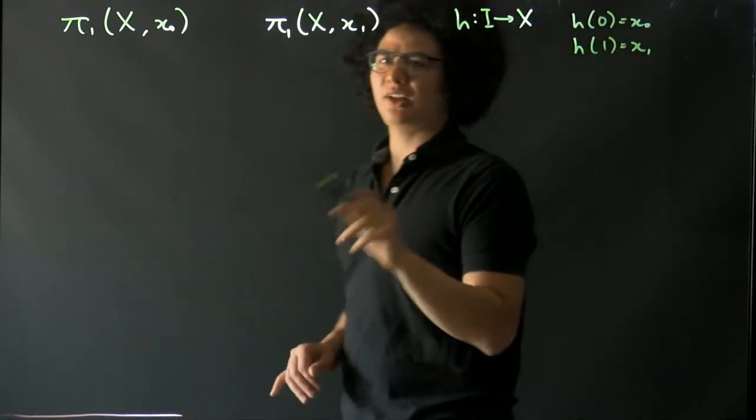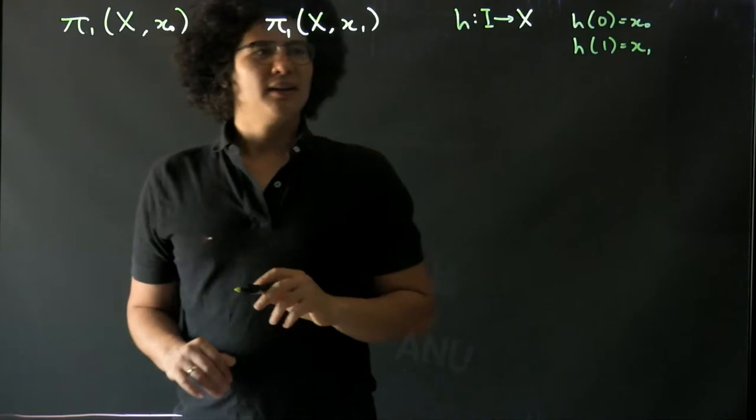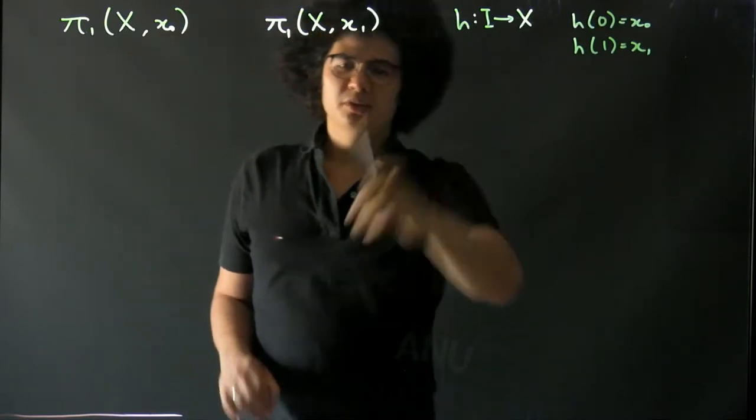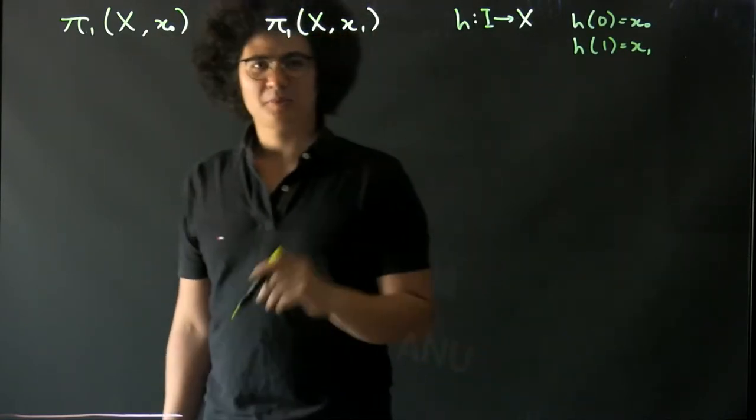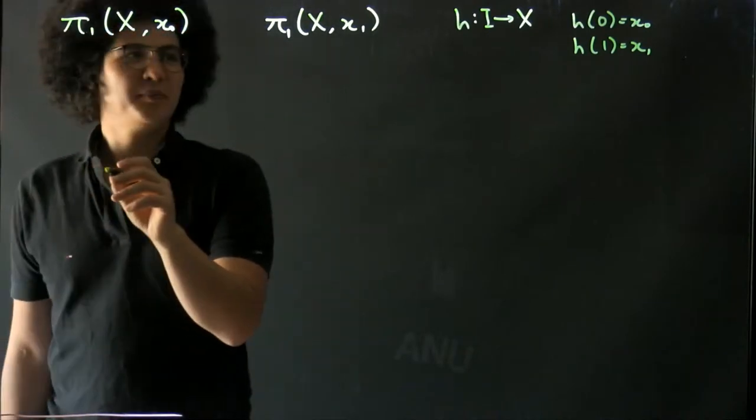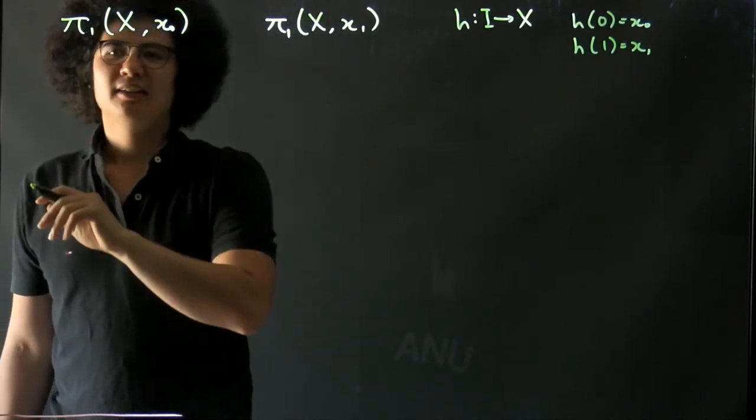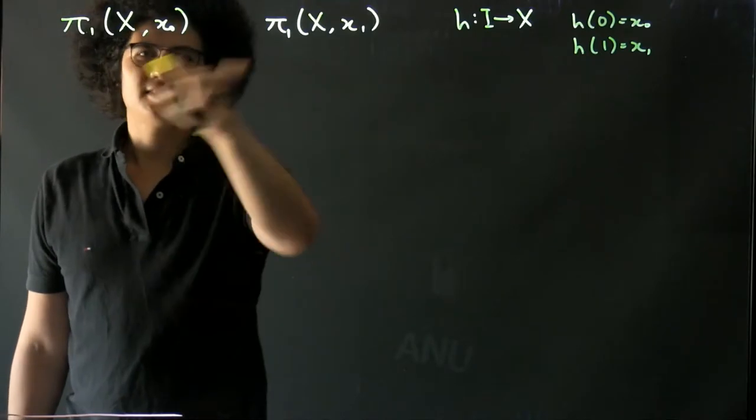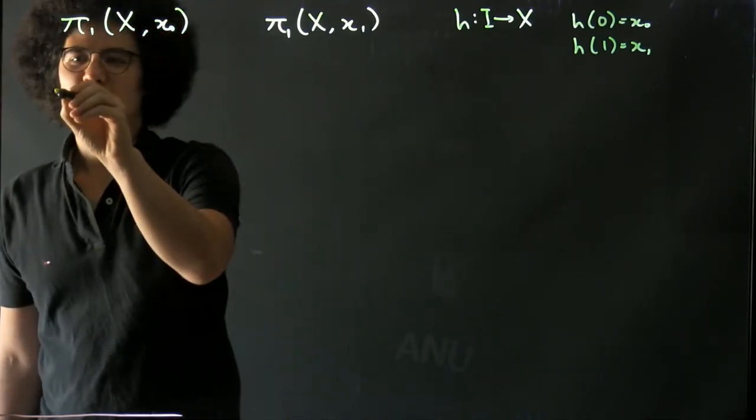So a path that starts at x₀ and ends at x₁. In general there will be many choices of paths you can make, and now we want to use this to get some relation between these two.